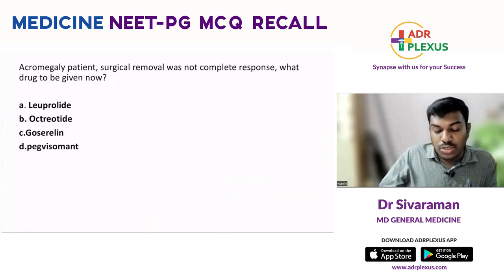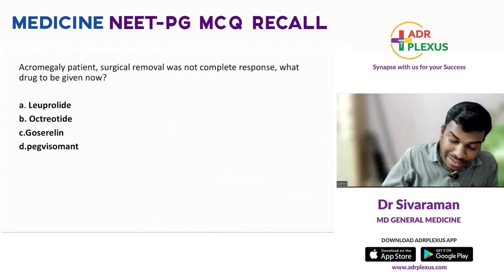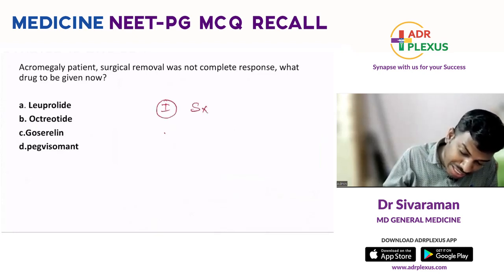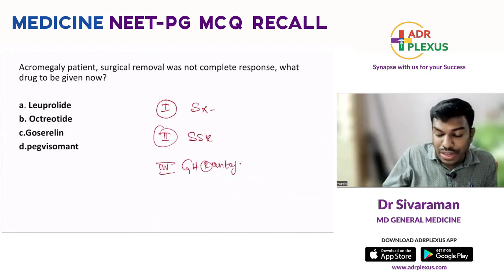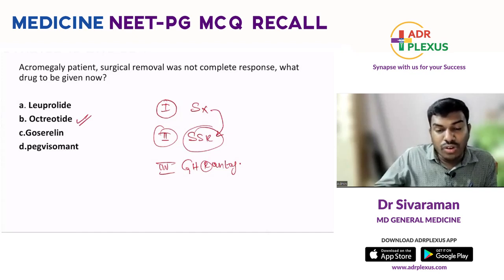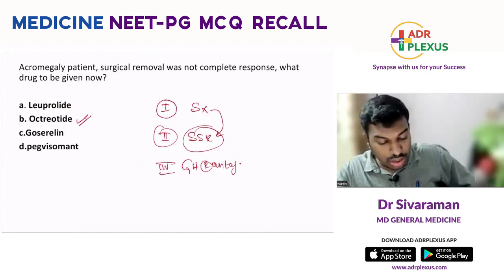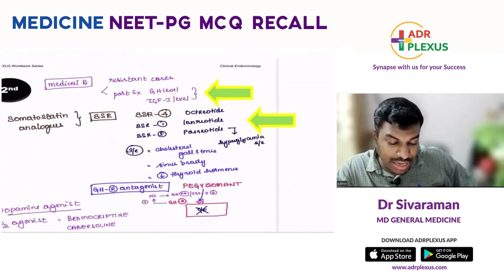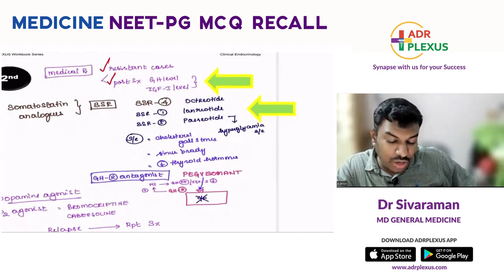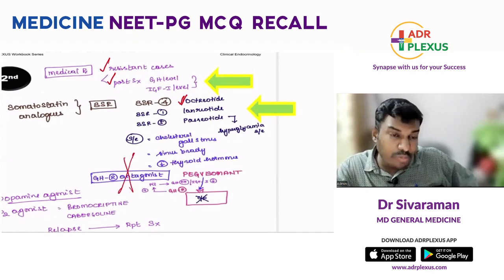Acromegaly patient — surgical removal was not complete; what drug to give now? Acromegaly treatment hierarchy: first surgery, second somatostatin receptor analog (SSA), third GH receptor antagonist. When surgery fails, go for SSA — one of which is octreotide. If octreotide fails, go for GH receptor antagonist pegvisomant. Post-surgery, if GH and IGF-1 levels are not falling, use octreotide. If octreotide fails, use pegvisomant.